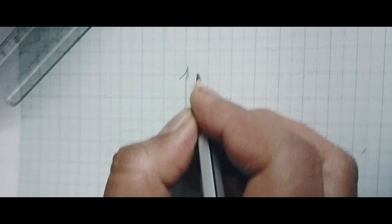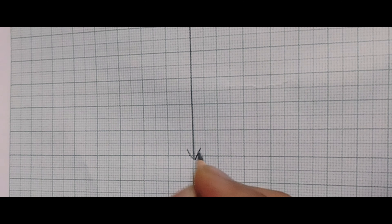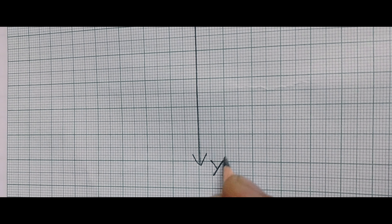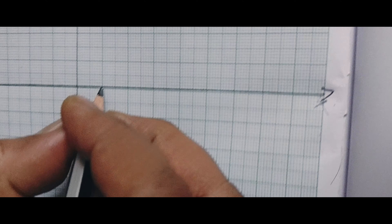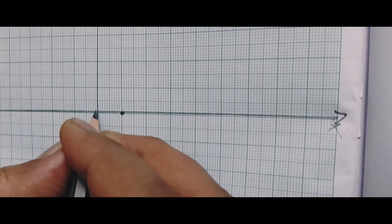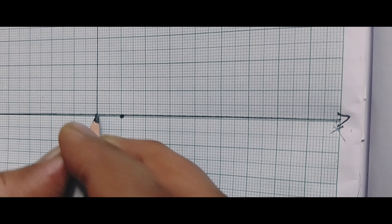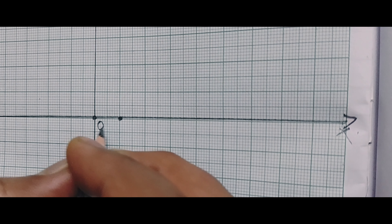The vertical axis is called Y. You have to write it in capital letter only — Y, Y-dash. Next, you have to see this box here. This one is the origin, marked as O.